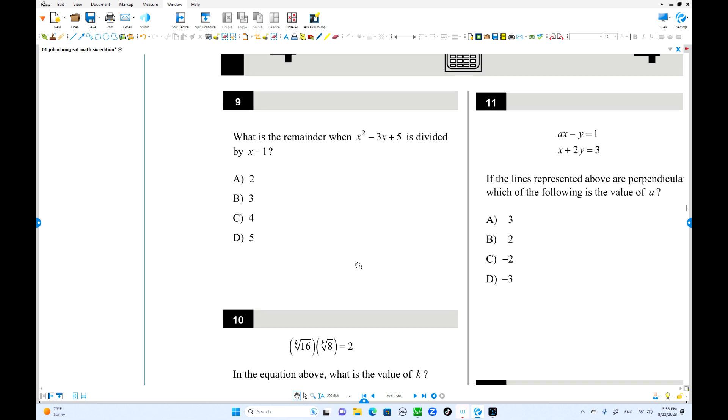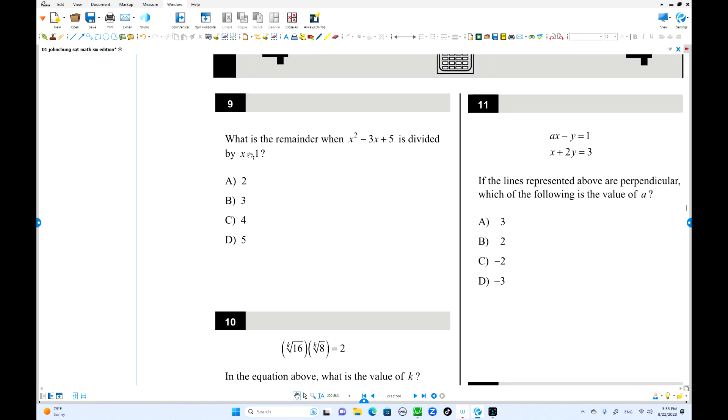What's the remainder when divided by x minus 1? That is the remainder theorem. Put this number x is 1 in the equation. 1 squared minus 3 times 1 plus 5. This is 1 minus 3 plus 5, which equals 3. That's the remainder. That's the remainder theorem.